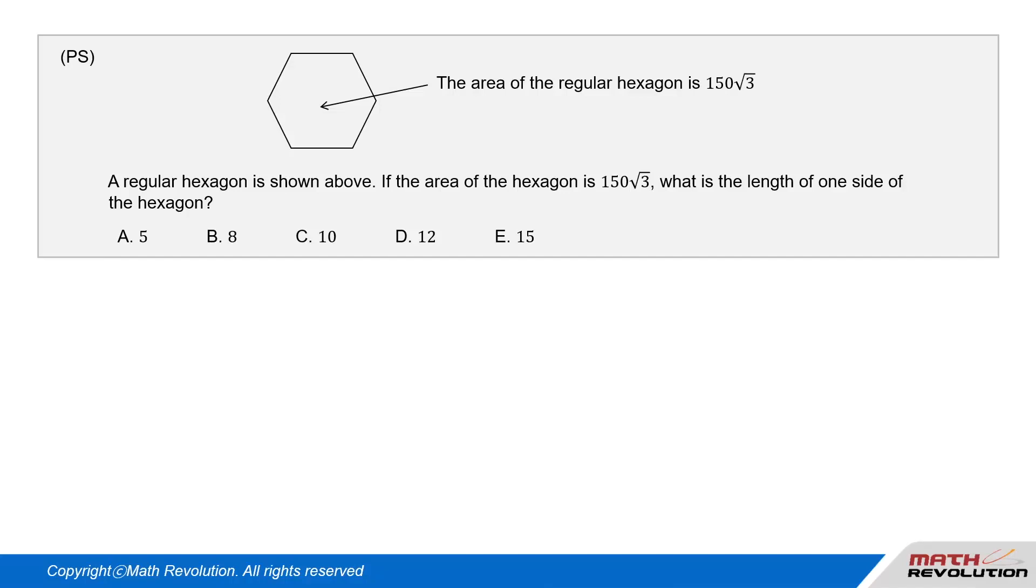P.S. A regular hexagon is shown above. If the area of the hexagon is 150√3, what is the length of one side of the hexagon?